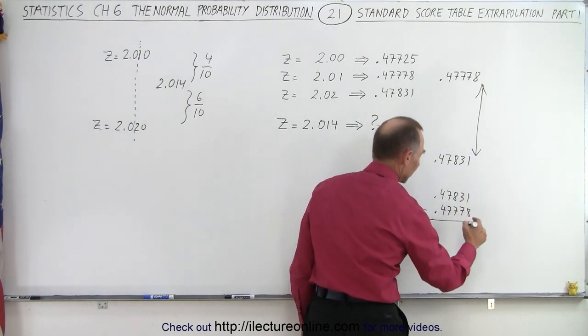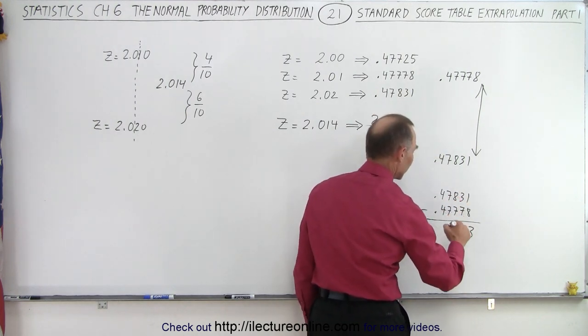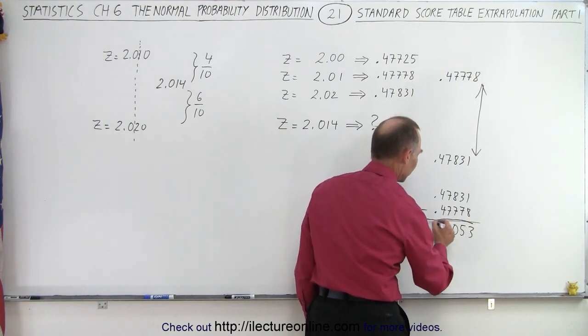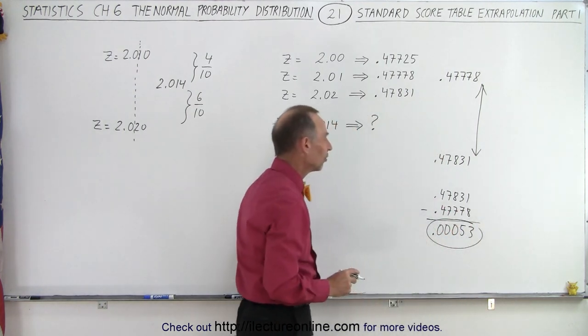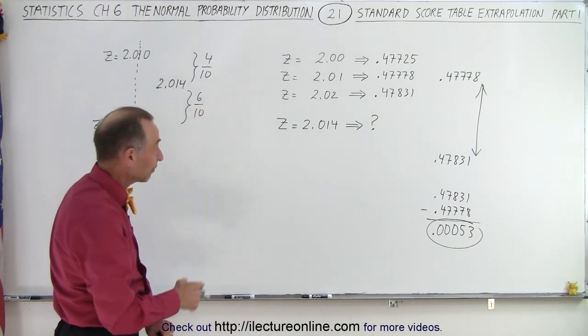And when we subtract, we get 11 minus 8, which is 3, 12 minus 7, which is 5, 7 minus 7, which is 0, 0, 0 point. So the difference between the two numbers is 0.00053.